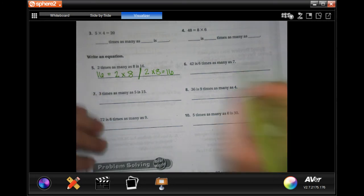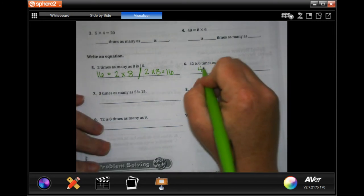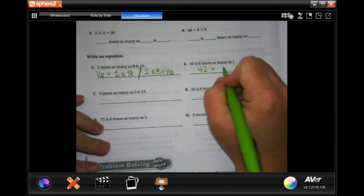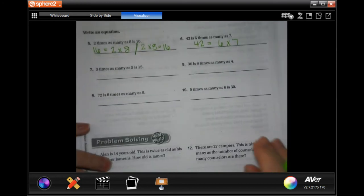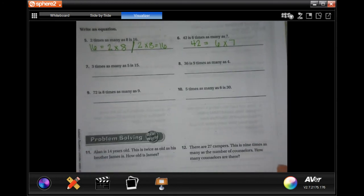So 42 is six times as many as seven. You guys do seven, eight, nine, and ten. We're going to go ahead and go down to number 11.